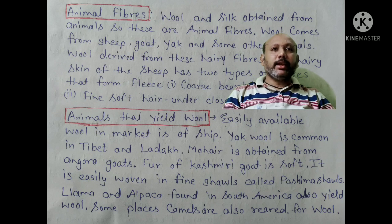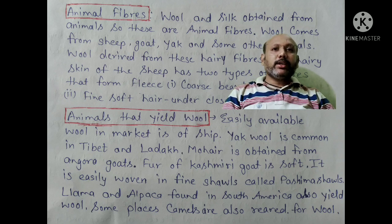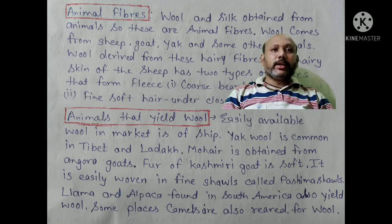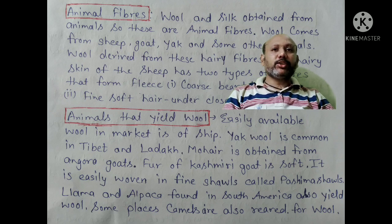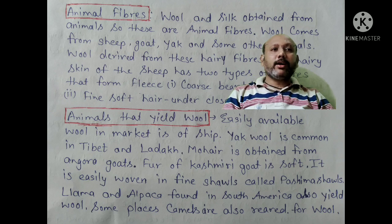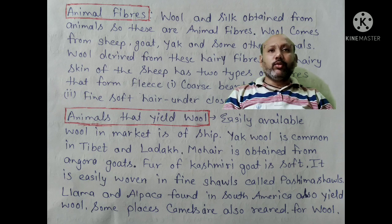Easily available wool in the market is from sheep. Yak wool is common in Tibet and Ladakh. Mohair is obtained from Angora goats. The fur of the Kashmiri goat is soft and is easily woven into fine shawls called Pashmina shawls. Llama and alpaca, found in South America, also yield wool. In some places, camels are also reared for wool.